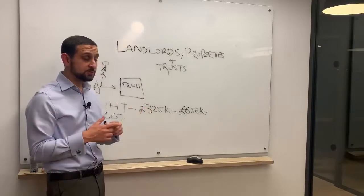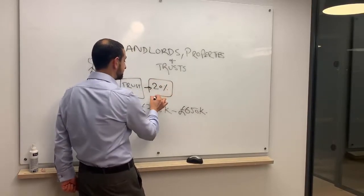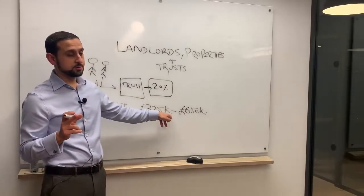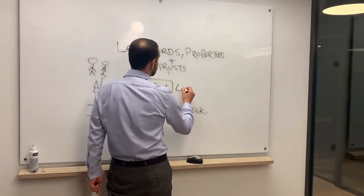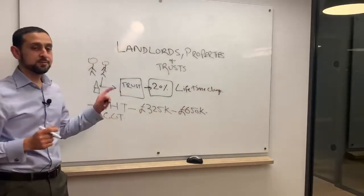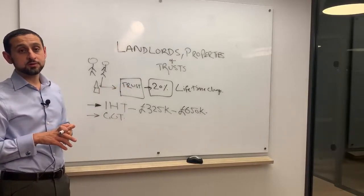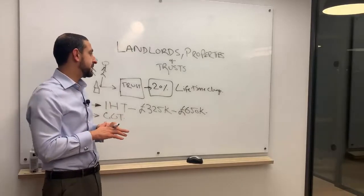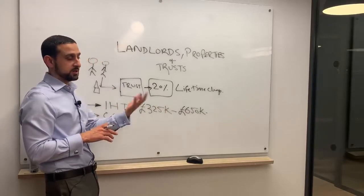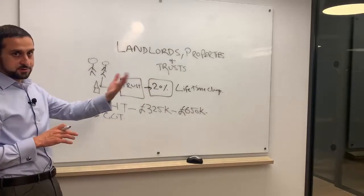This is called a lifetime charge. Very important - if you've got properties worth £5 million, this could potentially cost you roughly a million pounds in tax. You pay 20% now, and you pay the second half of the 20%, which is the total tax of 40% inheritance tax, 20% on death if you die within a certain period.